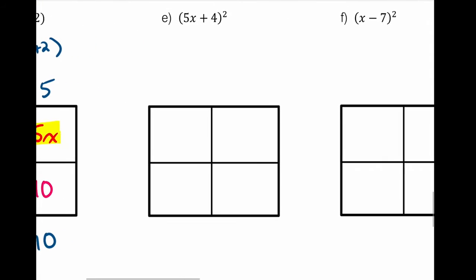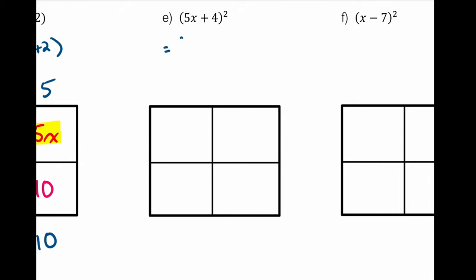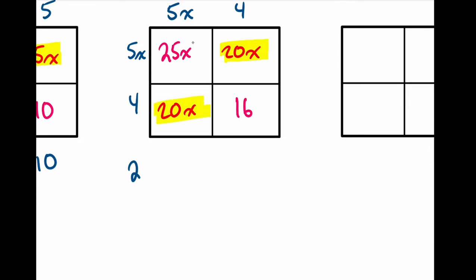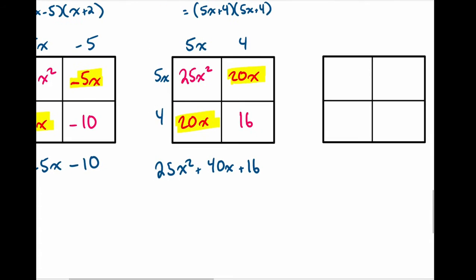Box method example (e): (5x + 4) squared. Remember that squared means multiplied by itself, so (5x + 4)² = (5x + 4)(5x + 4). Place the terms in the box and multiply rows and columns: 5x times 5x = 25x squared, 5x times 4 = 20x, 4 times 5x = 20x, 4 times 4 = 16. The two diagonals are like terms, combining to give 25x² + 40x + 16.